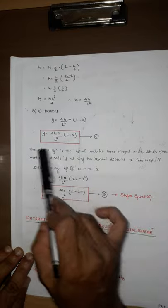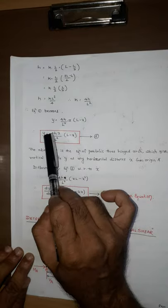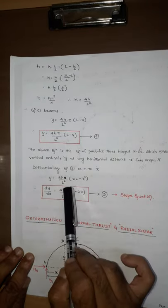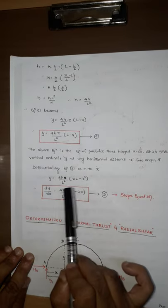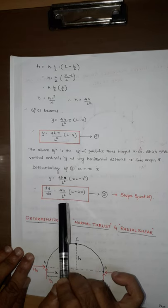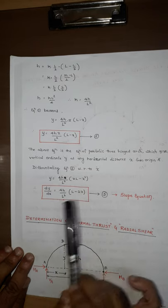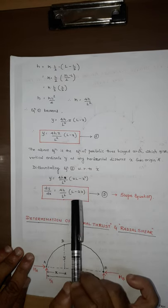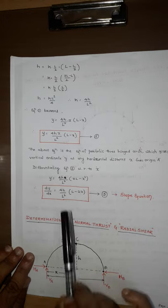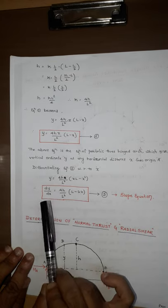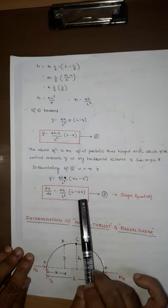Now let us differentiate equation (2), the parabolic equation. Differentiating: dy/dx = (4h/L²)·(L − 2x) — equation (3). This is known as the slope equation and gives the slope or angle theta at any point on the arch.